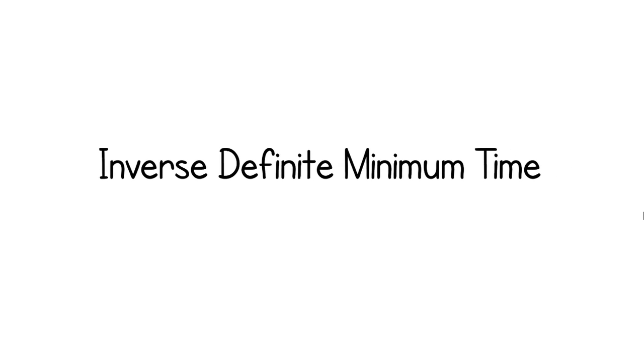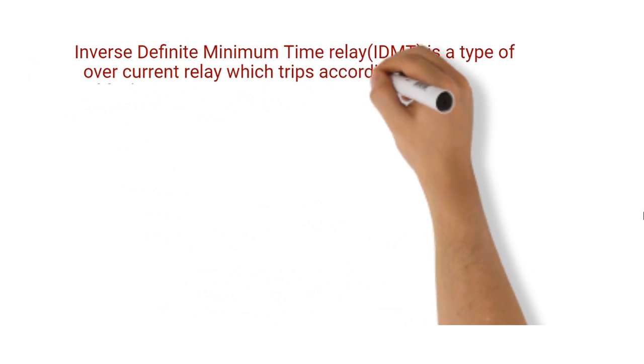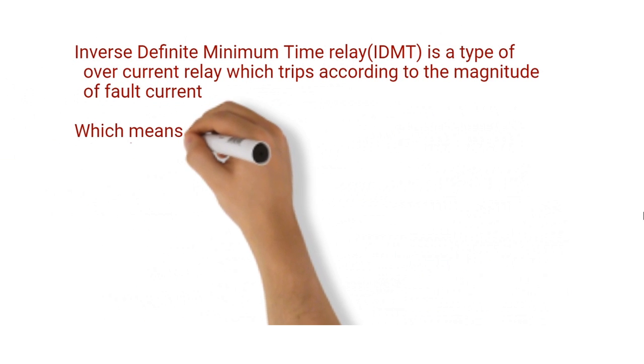Inverse Definite Minimum Time Relay. Inverse Definite Minimum Time Relay is a type of overcurrent relay which trips according to the magnitude of the fault current.